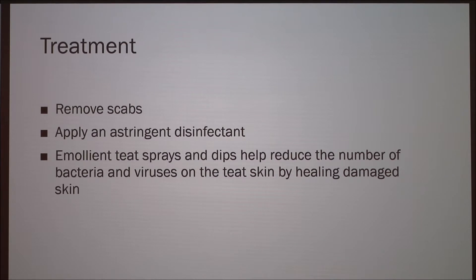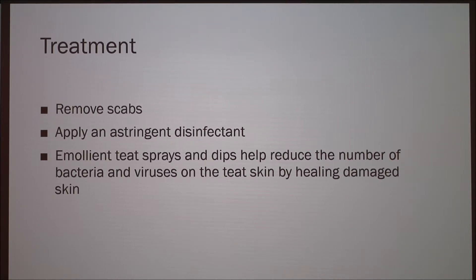The treatment in cows is pretty simple. Once a scab forms, you remove it and then an astringent disinfectant can be applied. Astringent disinfectants are chemicals that shrink or constrict body tissue — they coagulate skin proteins, hardening the skin to protect the healing layer. An example of an astringent disinfectant used in cattle is chlorhexidine solution.